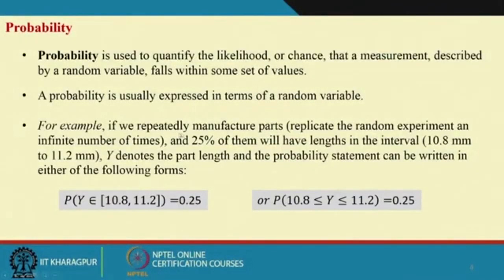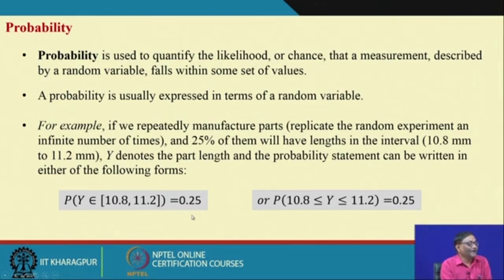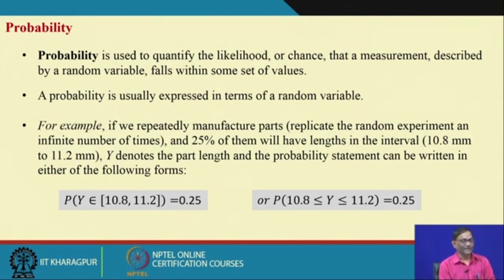When you say random variable, you are interested in the probability distribution of that variable. When you say probability distribution, you are talking about the distribution of the random variable. For example, if we repeatedly manufacture parts and 25% of them have length in the interval 10.8 mm to 11.2 mm, and y denotes part length, then: P(10.8 ≤ y ≤ 11.2) = 0.25.